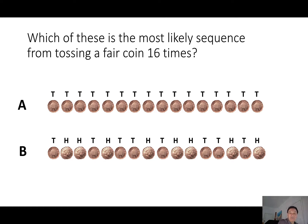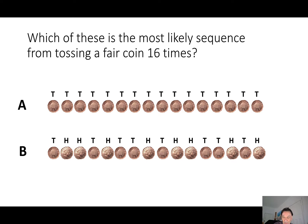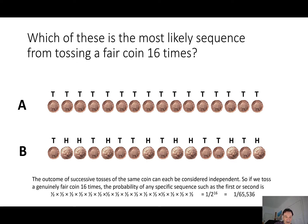People who don't understand probability will tend to answer that B is the most likely — it looks more typical of the kind of sequence you expect from a fair coin. But of course, if it's a truly fair coin and the probability of a tail is exactly the same as the probability of a head, then the probability of getting either of those sequences is exactly the same: it's just one half times one half, 16 times, because each successive coin toss is independent of the previous one.